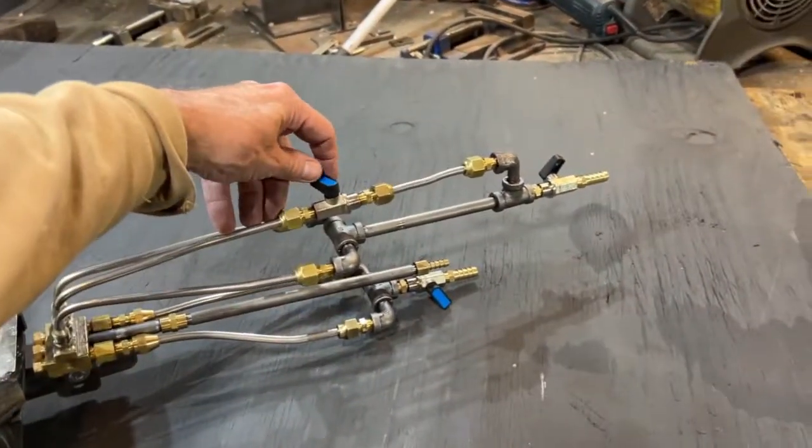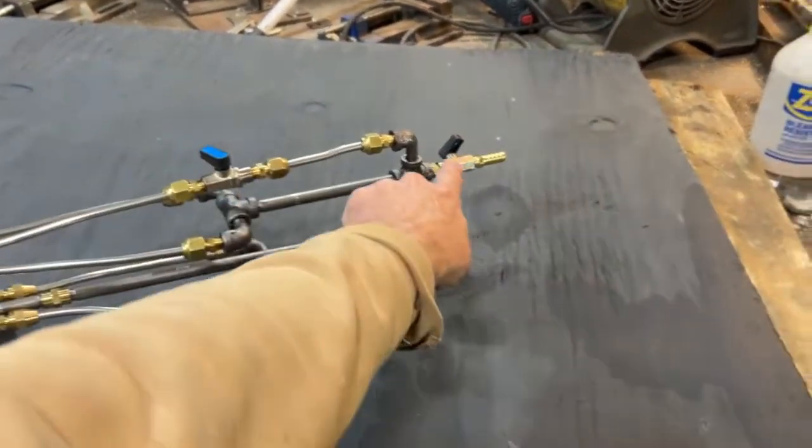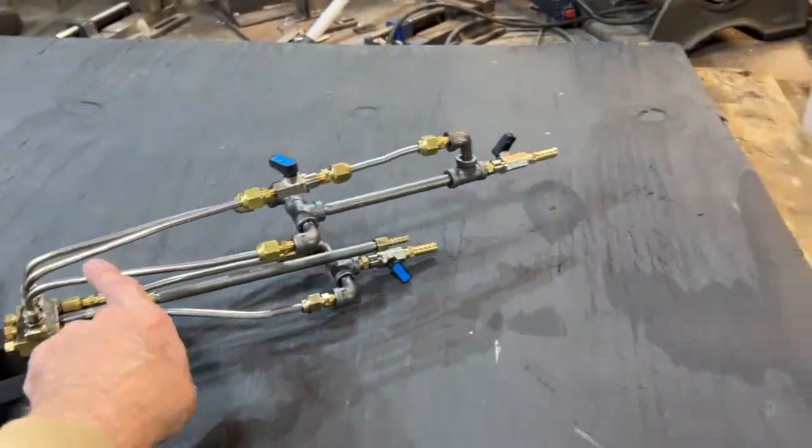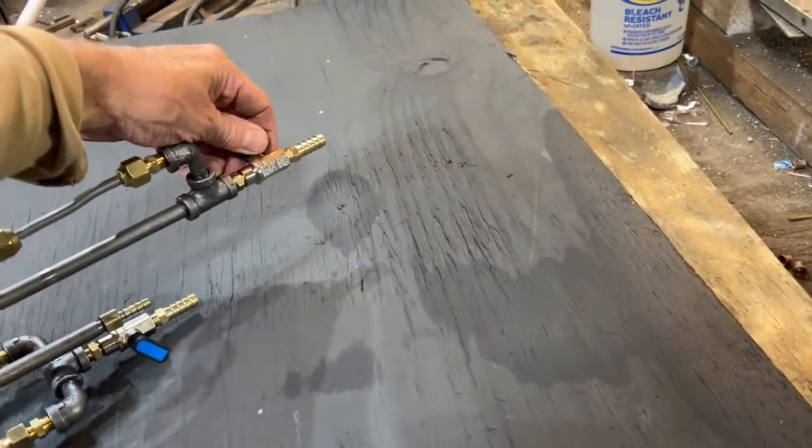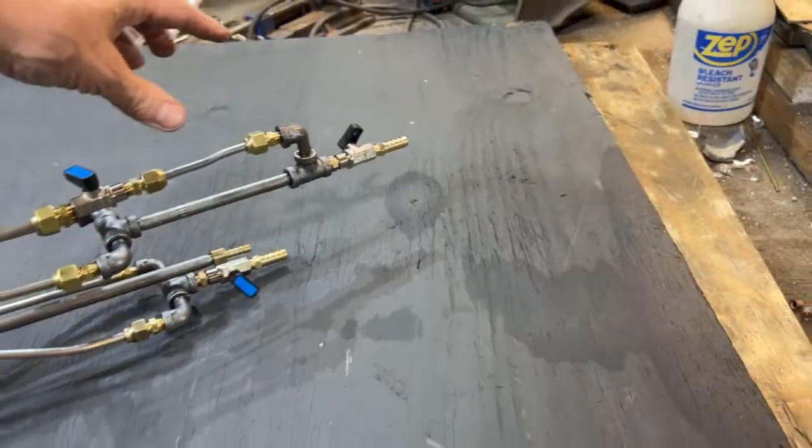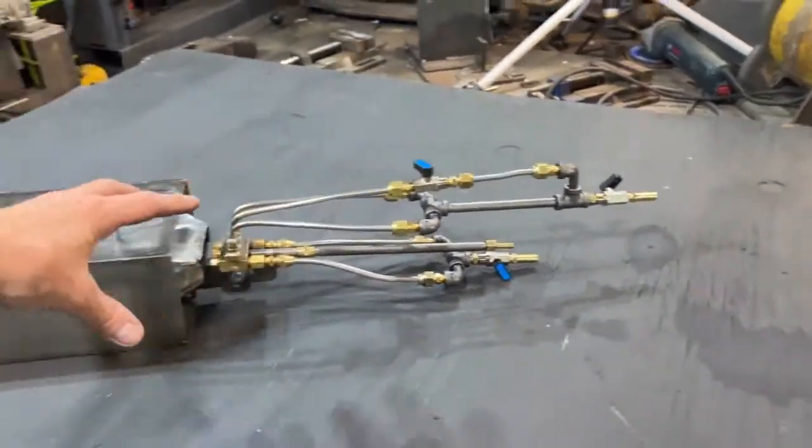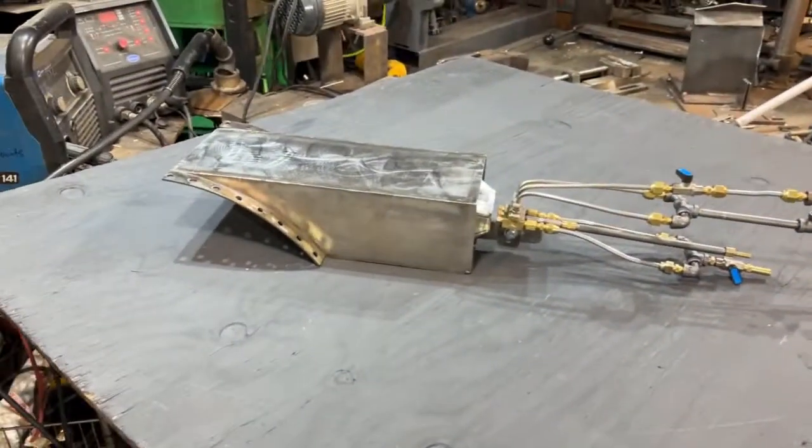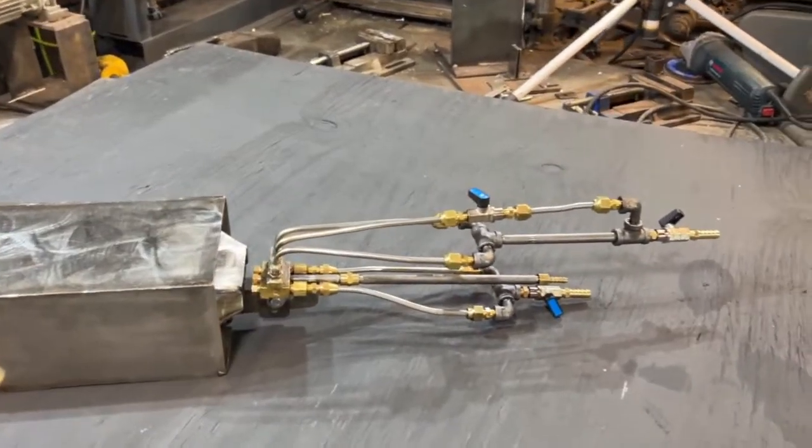When you turn this valve on, that's going to reduce the flow that was going to these nozzles, so you would have to turn that up just a little bit. You're dancing these valves, but with a little bit of practice, it's very easy to do.